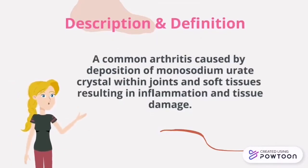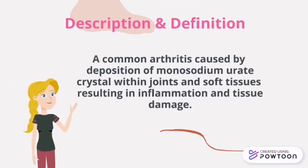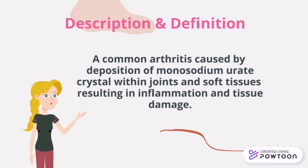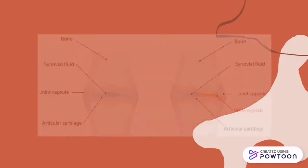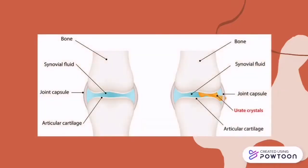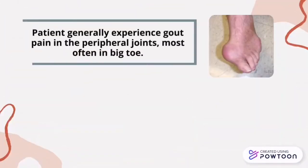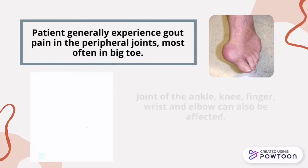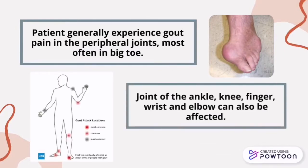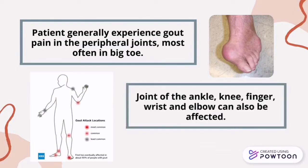Gout is a common arthritis caused by deposition of monosodium urate crystals within joints and soft tissue, resulting in inflammation and tissue damage. Patients with gout generally experience pain in the peripheral joints, most often in the big toe. However, the ankle, knee, finger, wrist, and elbow can also be affected.